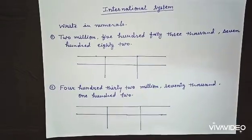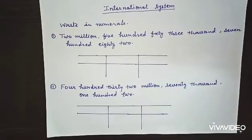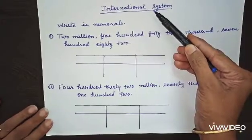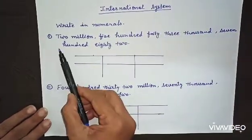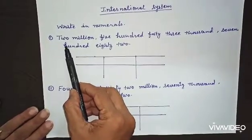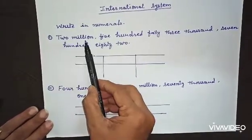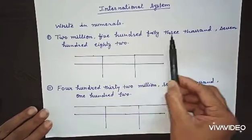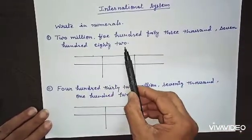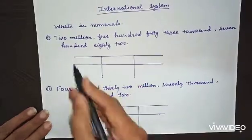Hello friends, today we are going to learn how to write in numerals in international system. Let us understand with this example. First we will read this: two million five hundred forty three thousand seven hundred eighty two.